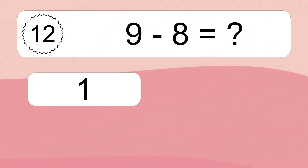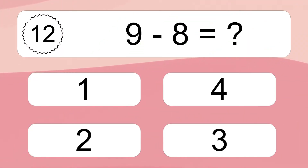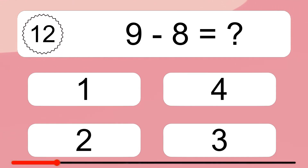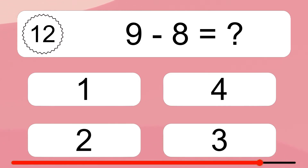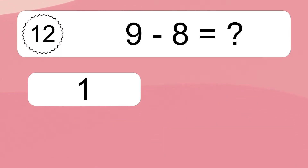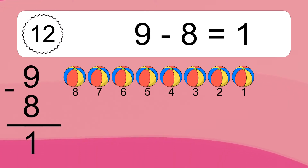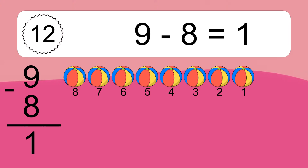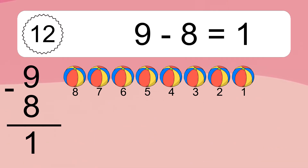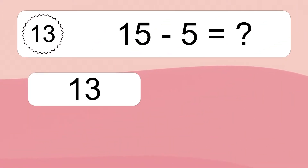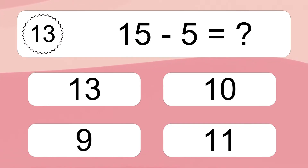9 minus 8 equals what? 9 minus 8 equals 1. Let's count it. 8, 7, 6, 5, 4, 3, 2, 1.